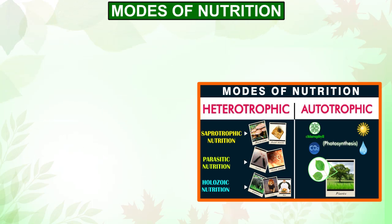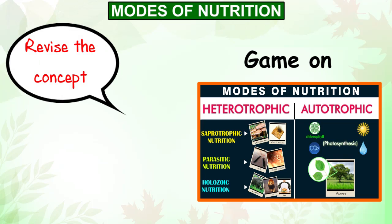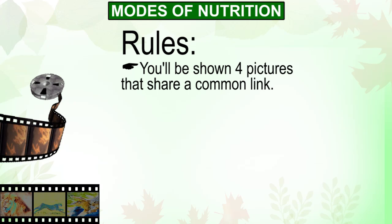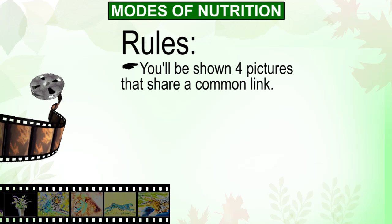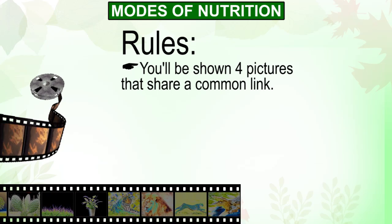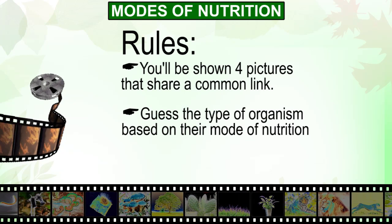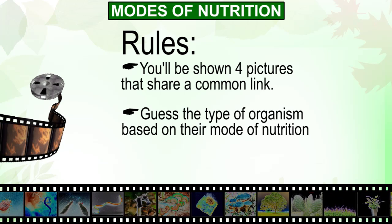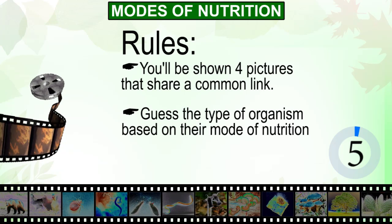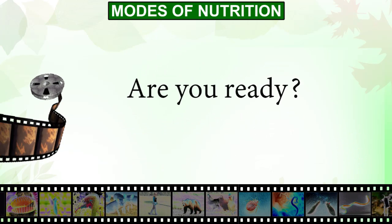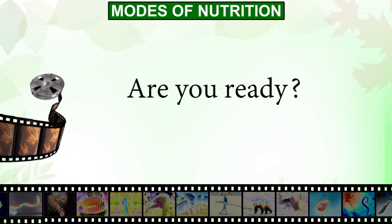Now that we know so much, let's play a small game which will help us in revising the concept. You will be shown four pictures, and all four pictures will have a common link between them based on their mode of nutrition. All you've got to do is guess the type of organisms based on the mode of nutrition they use. To answer the question, you will get only 5 seconds. So be quick. Are you ready? Let's begin.